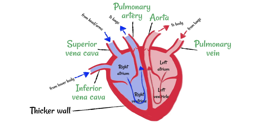Ventricles have got thicker walls than the atria, because the ventricles have got to send the blood further. The atria only have to send blood into the ventricles, which is still within the heart. Now, while both ventricle walls are thicker because they have more muscle, the one on the left-hand side is the thickest. From the right ventricle, blood only has to go to the lungs. The muscles in the left ventricle, on the other hand, have got to be strong enough to pump blood right around the body through the aorta, so that is the thickest muscle of all the chambers in the heart.